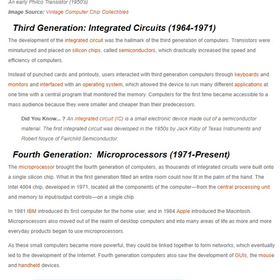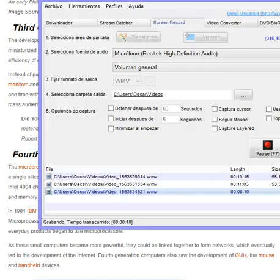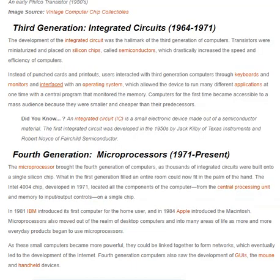Third generation — integrated circuits, 1964 to 1971. The development of the integrated circuit was the hallmark of the third generation of computers. Transistors were miniaturized and placed on silicon chips called semiconductors, which drastically increased the speed and efficiency of computers. Instead of punch cards and printouts, users interacted with third generation computers through keyboards and monitors, interfacing with an operating system that allowed the device to run many different applications at one time with a central program that monitored the memory.